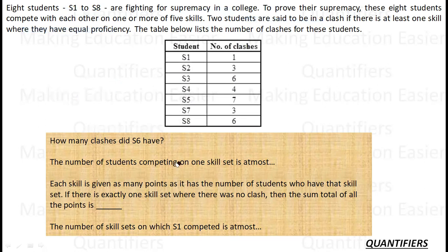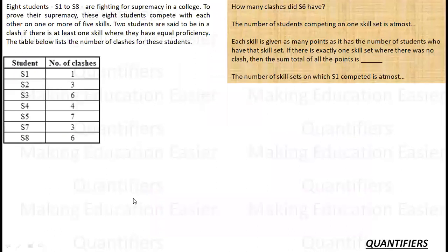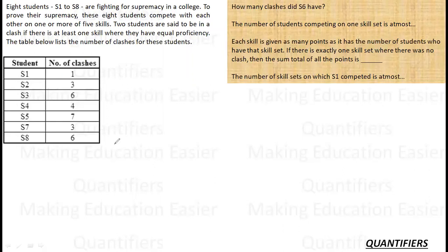The table below lists the number of clashes of each student. Now I have to determine who clashed with whom and on how many different skills. The best observation here is that S1 has only one clash, while S5 has seven clashes — meaning S5 clashes with all other seven students, one each.